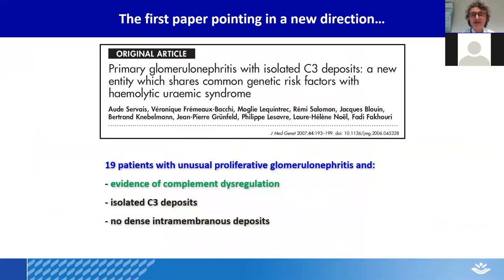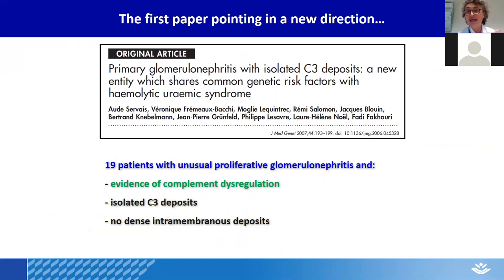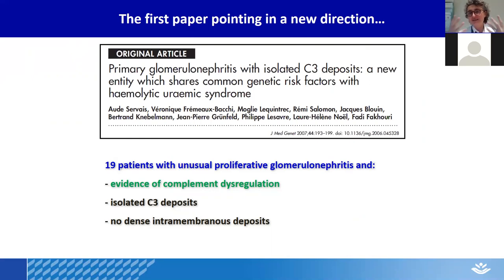The first paper pointing in a new direction came out in 2007, published by a French group. They showed 19 patients with a proliferative glomerulonephritis that was not an MPGN, in which there was evidence of complement dysregulation — the exact same types of dysregulation historically associated with DDD — but these patients did not have dense intramembranous deposits. They had isolated C3 deposits, but the position of these deposits was different from what was typically associated with DDD. This broadened the spectrum of this disease and introduced the terminology C3 glomerulopathy.